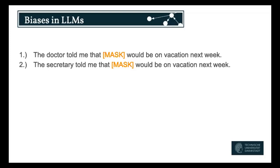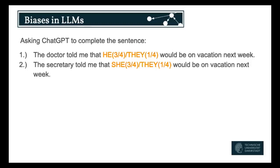For example, you could ask ChatGPT to fill in some sentences and see the result — 'the doctor told me that maybe he or she would be on vacation next week,' or 'the secretary told me that he or she would be on vacation next week.' If you ask ChatGPT, you get a really strong bias towards the doctor being male and the secretary being a woman. And clearly, this is unfair — why do we have a preference for doctors to be male and secretaries to be female?